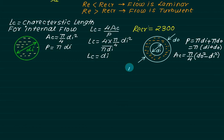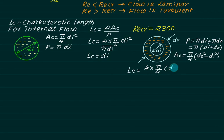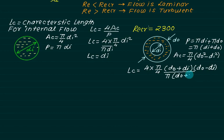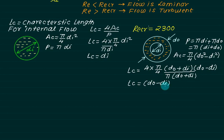Applying the characteristic length formula, LC equals 4 times (pi/4 times (do squared minus di squared)) divided by pi times (do plus di). Using the identity (do squared minus di squared) equals (do plus di)(do minus di), the terms (do plus di), pi, and 4 all cancel, giving characteristic length LC equals do minus di for an annular pipe.